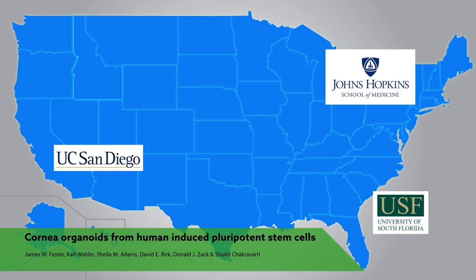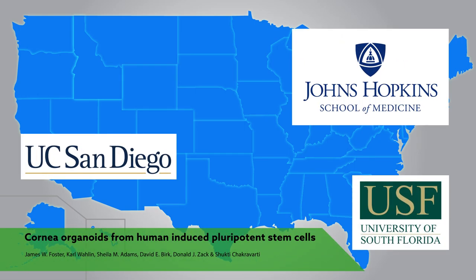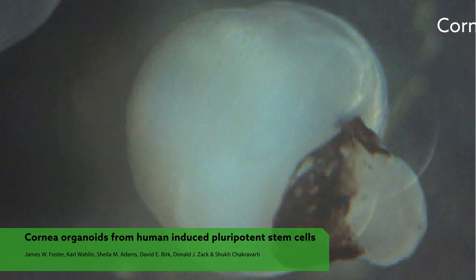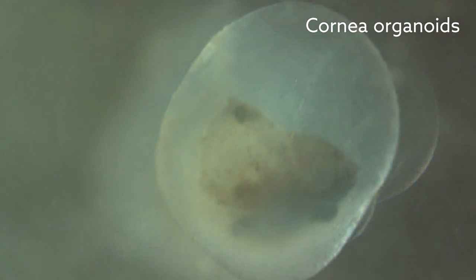A group of scientists collaborating across the U.S. has developed a new tool to help understand eye diseases: cornea organoids, miniaturized corneas that can be grown in the lab using human stem cells.